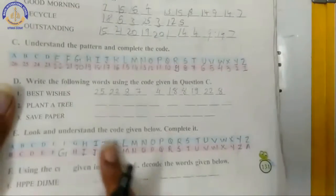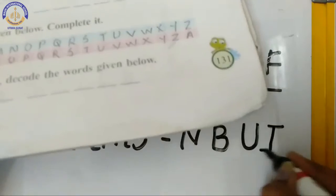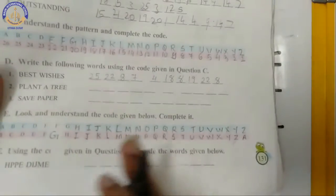T के नीचे, T, T के नीचे है U, तो यहाँ पे लिखो U. H के नीचे, H के नीचे है I, तो right here I. And S के नीचे है, S के नीचे है T.